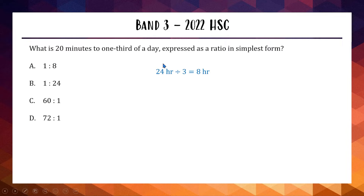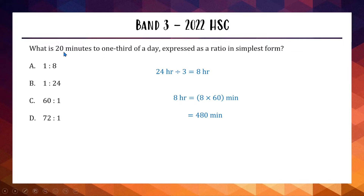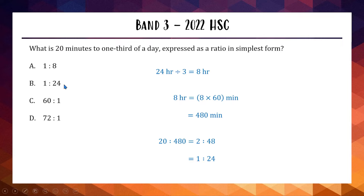One third of a day: take 24 hours divided by 3, which is 8 hours. Eight hours times 60 minutes equals 480 minutes. So our ratio is 20 minutes to 480 minutes, which simplifies to 20 to 480. Take a zero off both sides to get 2 to 48, then cut both in half to get 1 to 24, which is option B. If you type 20 over 480 into your calculator as a fraction, it gives you 1 over 24.